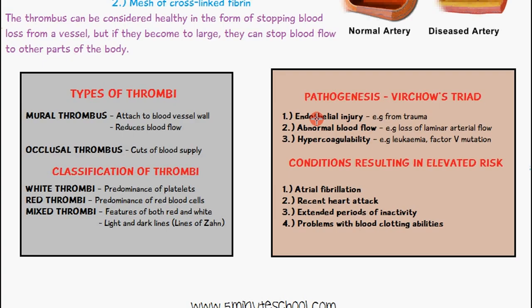Another factor is abnormal blood flow. Normally we have laminar arterial blood flow, where the greatest pressure is at the center, but various diseases can distort this into turbulence. The third factor is hypercoagulability, where coagulation is more likely to occur, as seen in diseases like leukemia or factor 5 mutation.